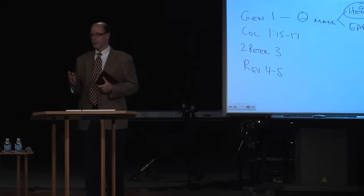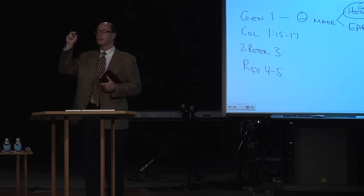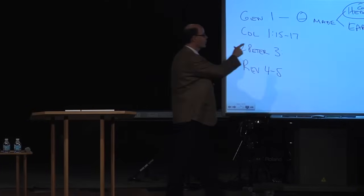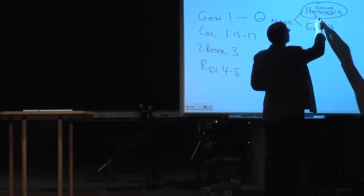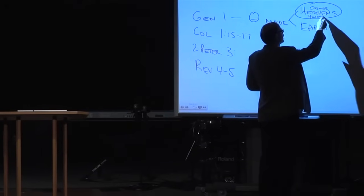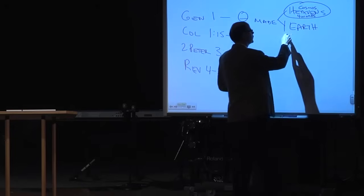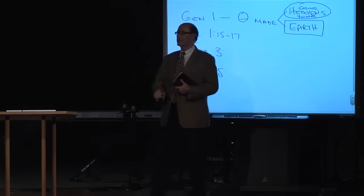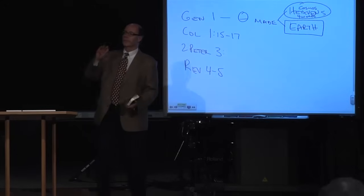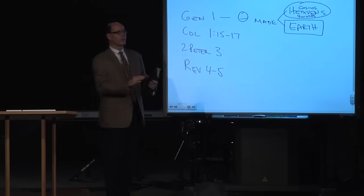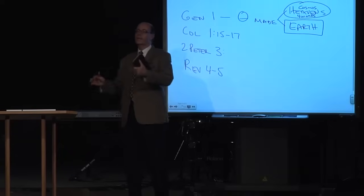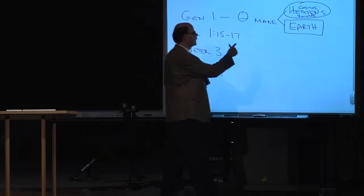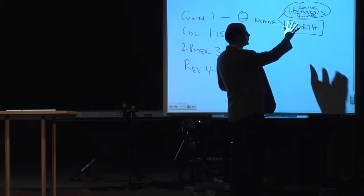It says he made the sun to rule by day and the moon to rule by night. He made the stars also. Made the stars also. So he gives four words to something that numbers in the octillions at the least. I mean, a number beyond what we can understand of stars and galaxies of stars. And he only devotes four words to that. Now, is God saying something there?